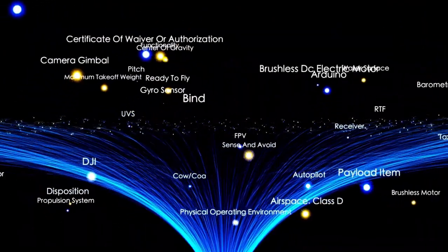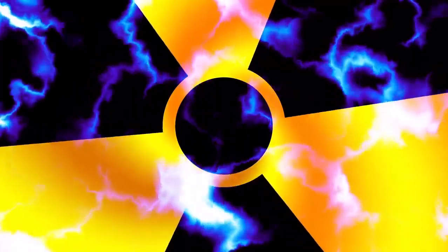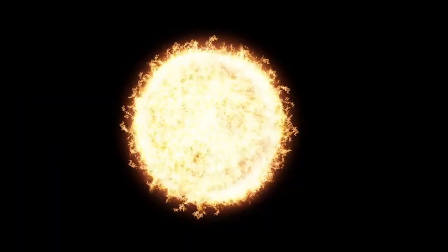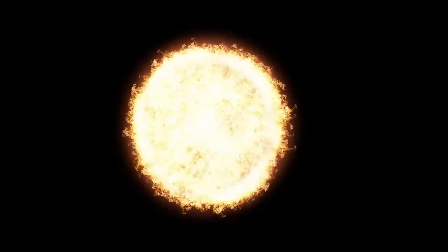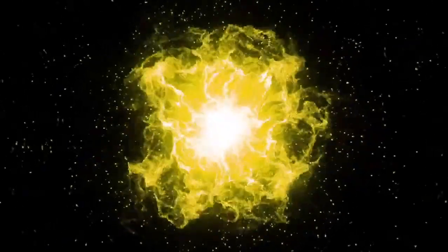The core of Betelgeuse, like all stars, has been undergoing nuclear fusion, converting hydrogen into helium. However, as the star ages, it has exhausted the supply of hydrogen in its core, leading to the fusion of heavier elements such as carbon, oxygen, and eventually iron.